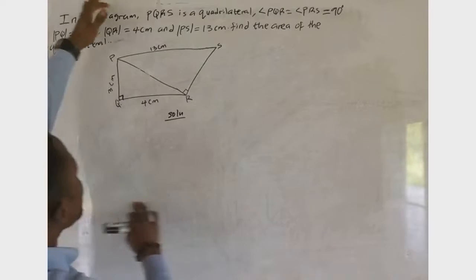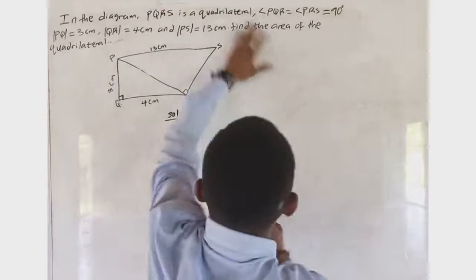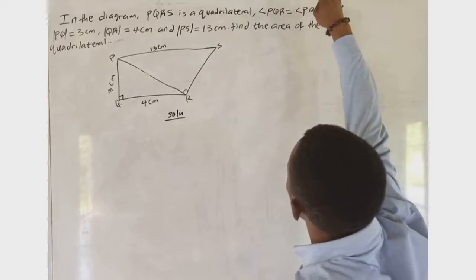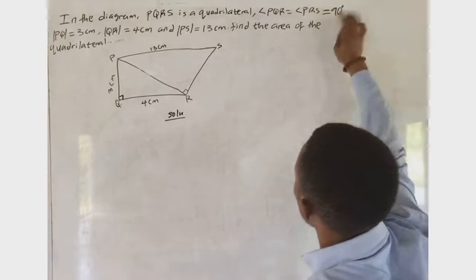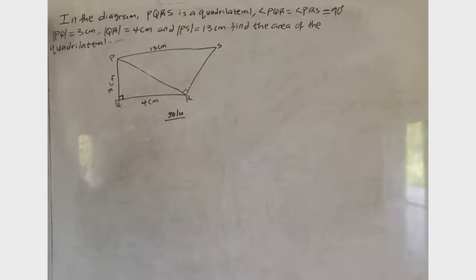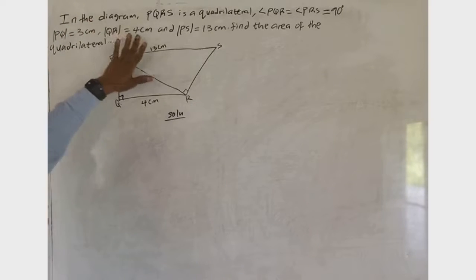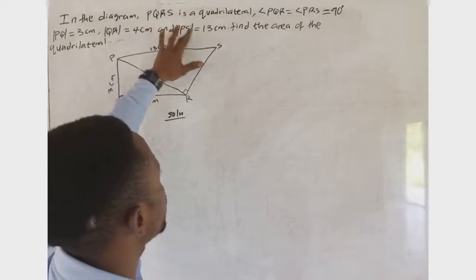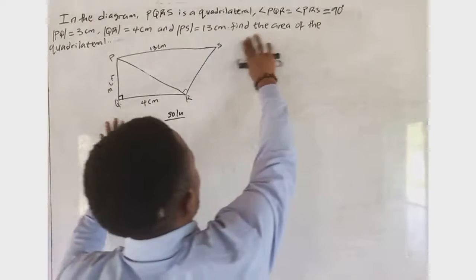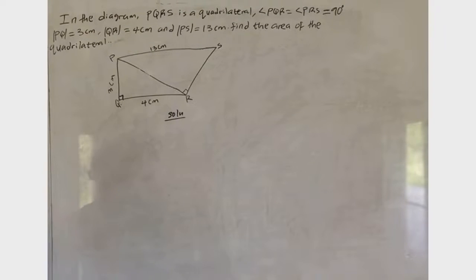This question states that in the diagram, PQRS is a quadrilateral. Angle PQR is equal to angle PRS, both equal to 90 degrees. Also given: side PQ as 3 cm, side RS as 4 cm, and side PS as 13 cm. We want to find the area of the quadrilateral.